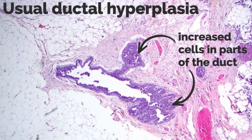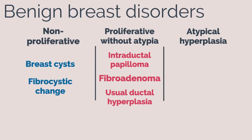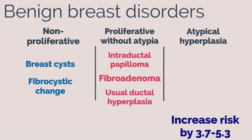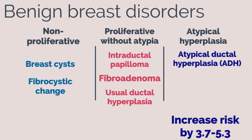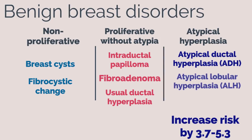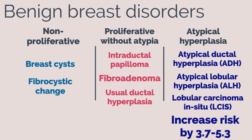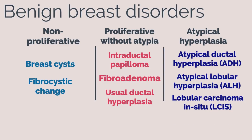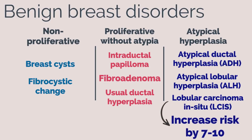The last category in benign breast disorders is atypical hyperplasia. These disorders increase the risk of subsequent breast cancer with a relative risk of 3.7 to 5.3 and include atypical ductal hyperplasia (ADH), atypical lobular hyperplasia (ALH), and often lobular carcinoma in situ (LCIS). Note that the relative risk of breast cancer is different: LCIS is associated with a 7 to 10 times increased relative risk.